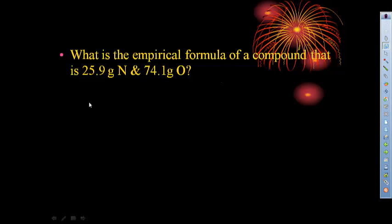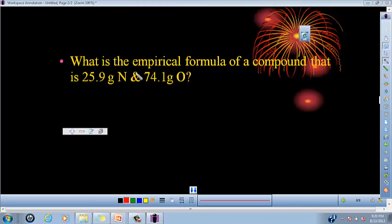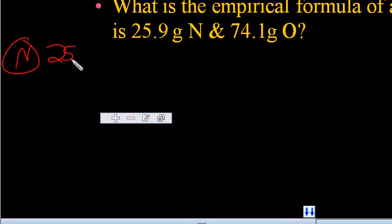Alright. So this problem: what is the empirical formula of a compound that is 25.9 grams of nitrogen and 74.1 grams of oxygen? So we're going to start with our nitrogen. The first step was take the grams and convert it to moles.